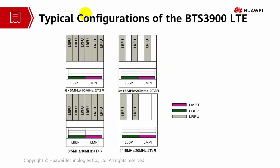Let's go through the typical configurations of the BTS 3900 series LTE. The first example is 6L with 5 or 10 MHz bandwidth, 2T2R. The second example is 3 cells with 15 MHz and 20 MHz, 2T2R — three sectors with limited LRFUs. The third example has three cells at 5 MHz and 10 MHz with no transmitters and receivers. The last example is 1 cell with 15 and 20 MHz, 4T4R. Different configurations have different installation or connection modes, depending on network operator traffic evaluation.